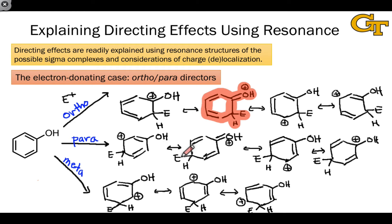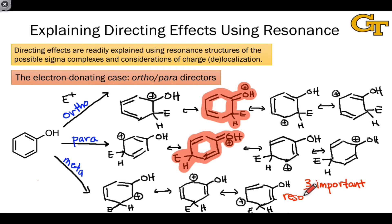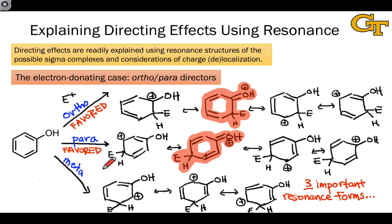When the electrophile substitutes at the para position, we again have four total important resonance forms, and once again one of those involves sharing the positive charge with the OH group. This key resonance form is missing from the meta case. Substitution at the meta position results in only three important resonance forms, and in none of these does the electron-donating hydroxyl group get involved in stabilizing the charge. Because the sigma complexes from ortho and para substitution have more important resonance forms than the one from meta substitution, those two reaction pathways are favored.